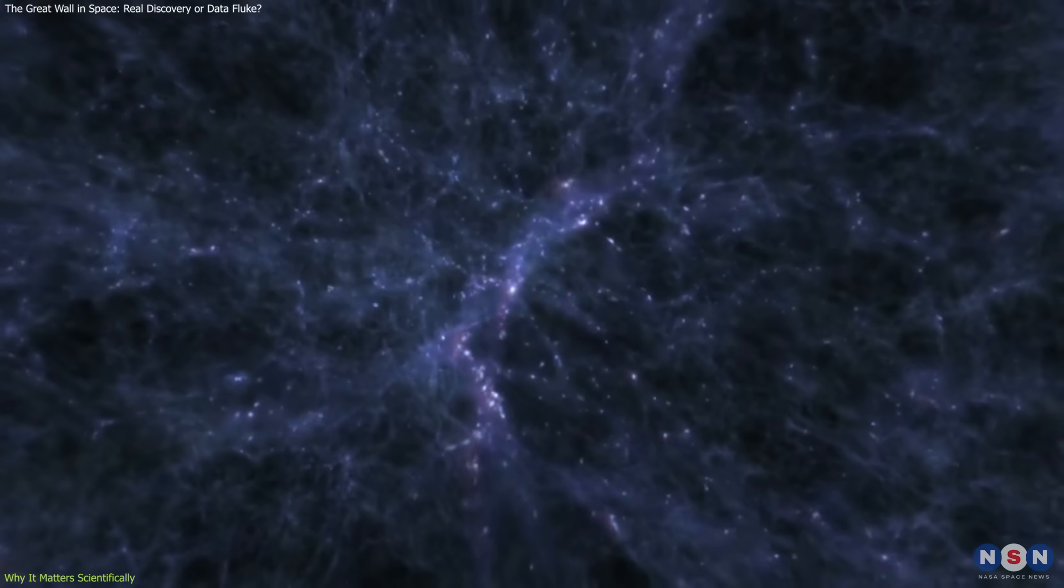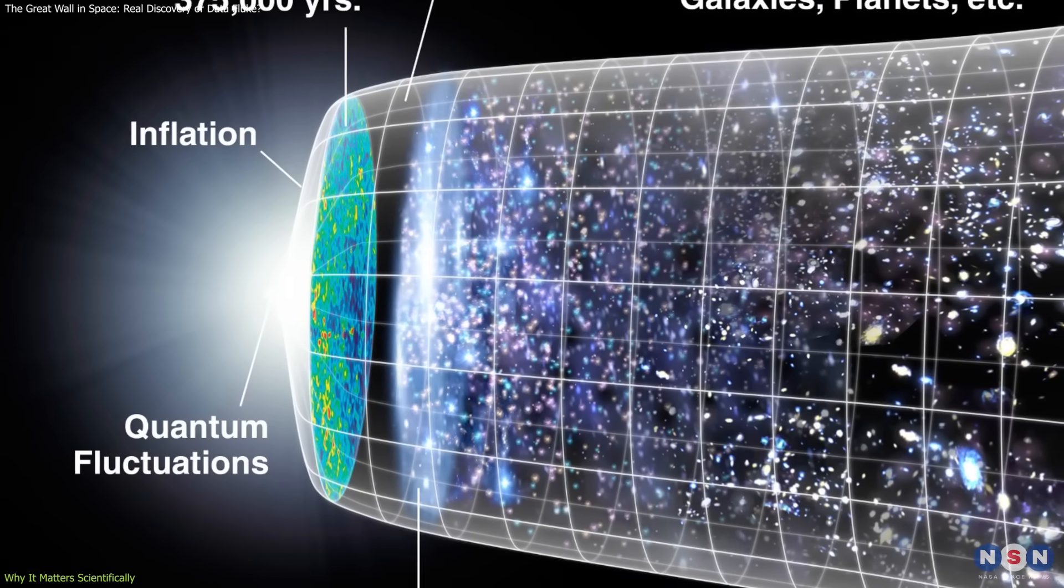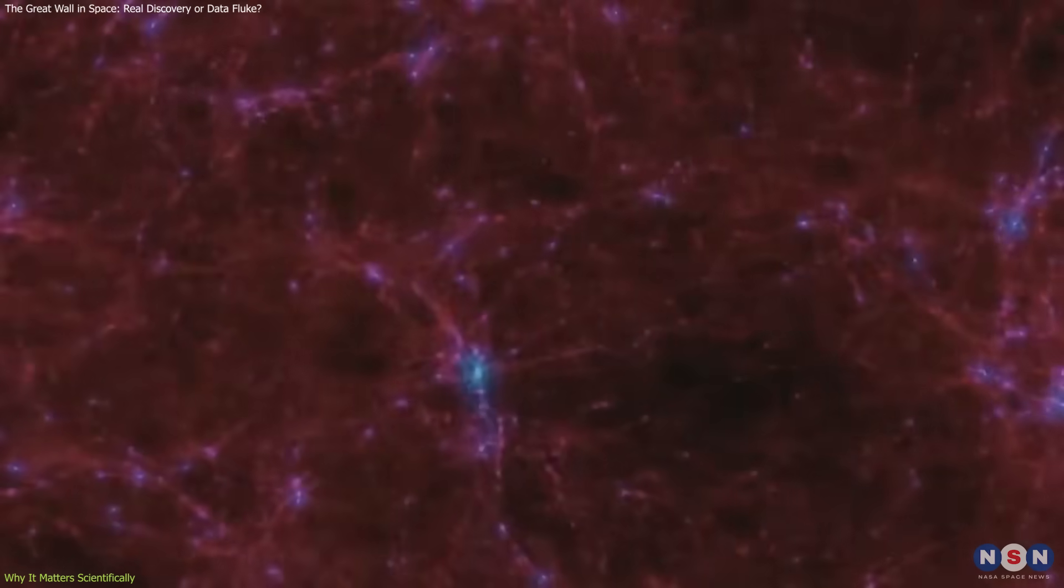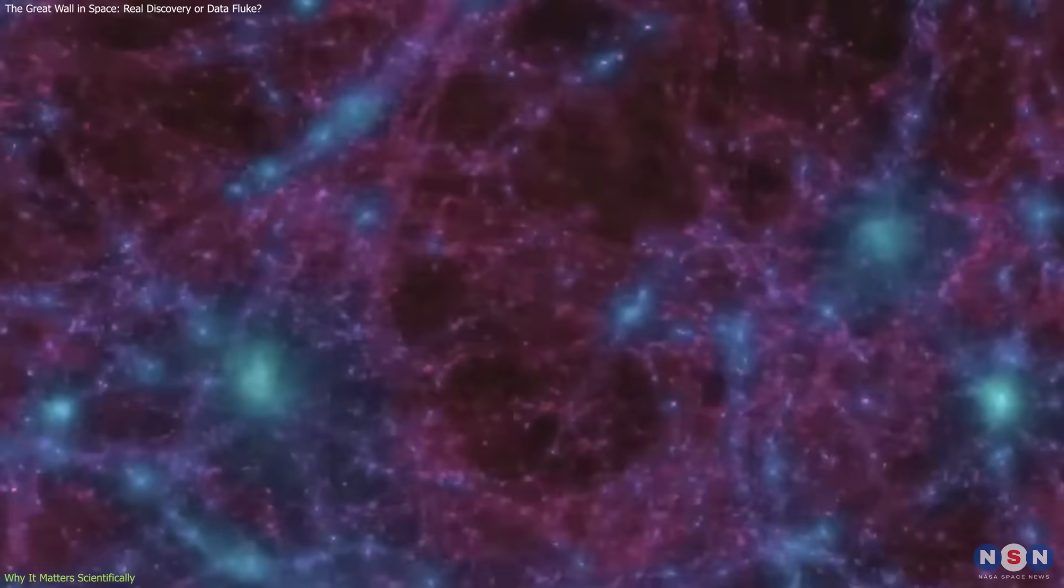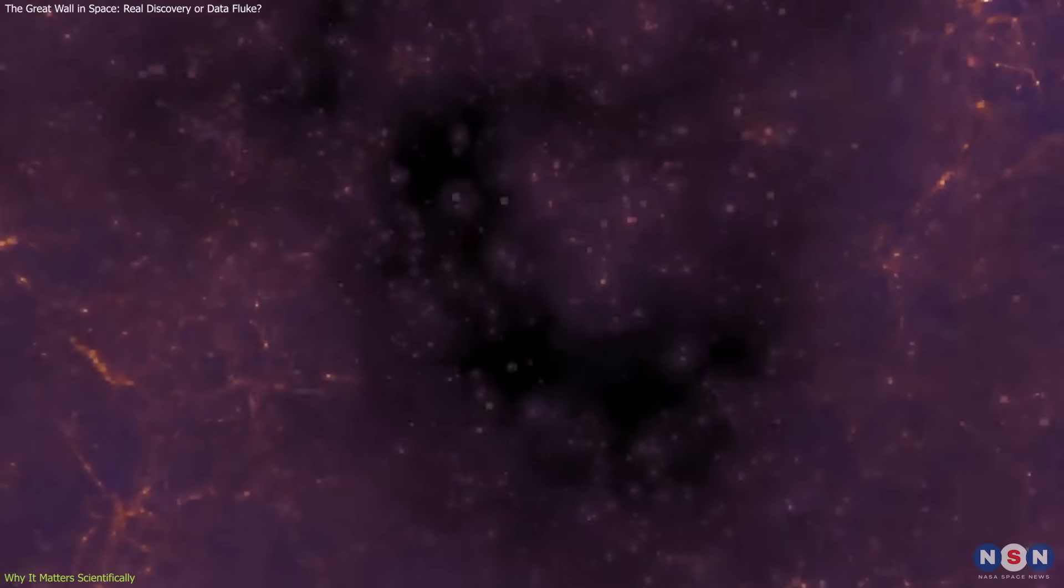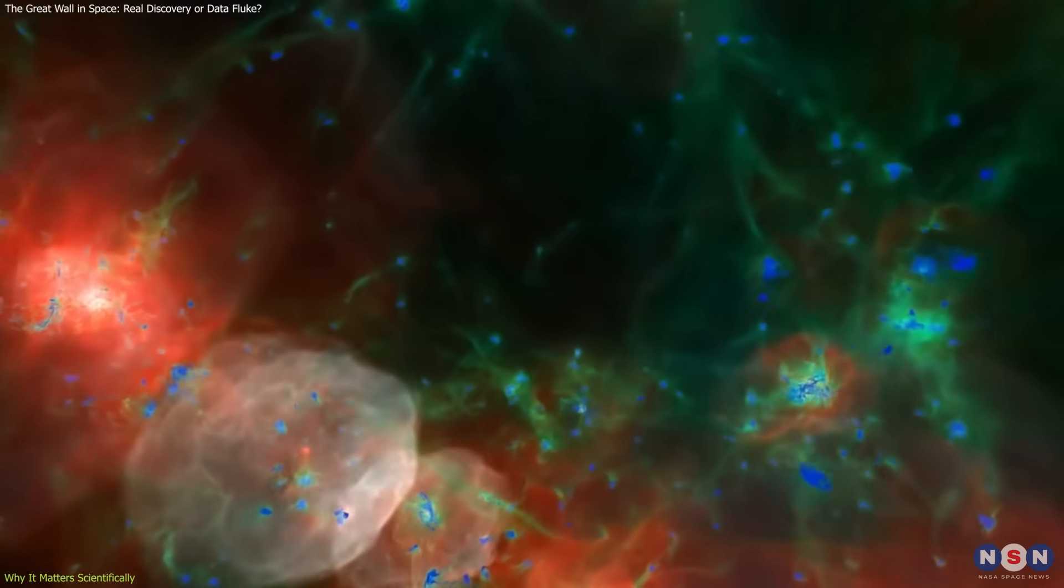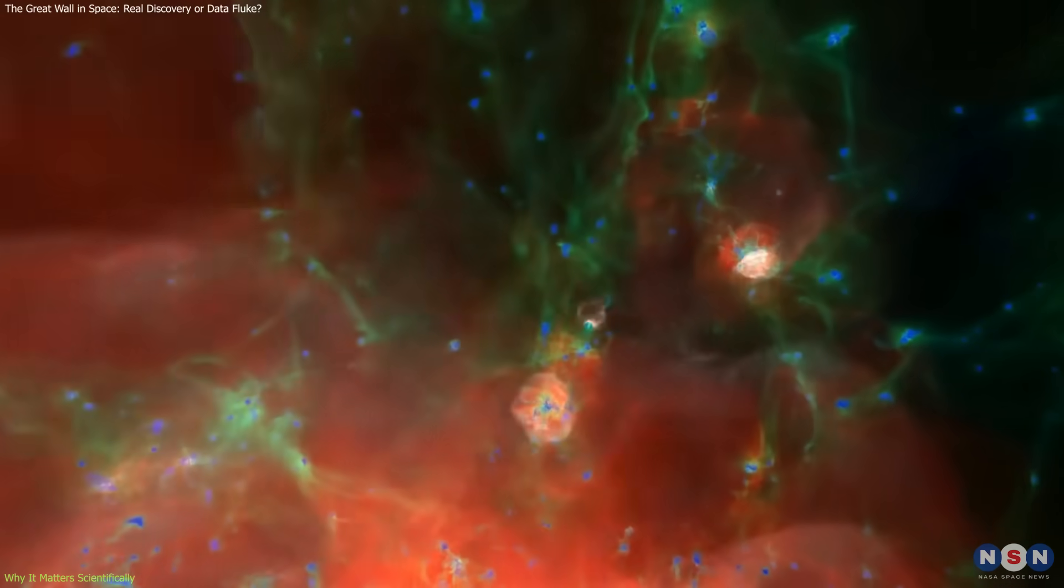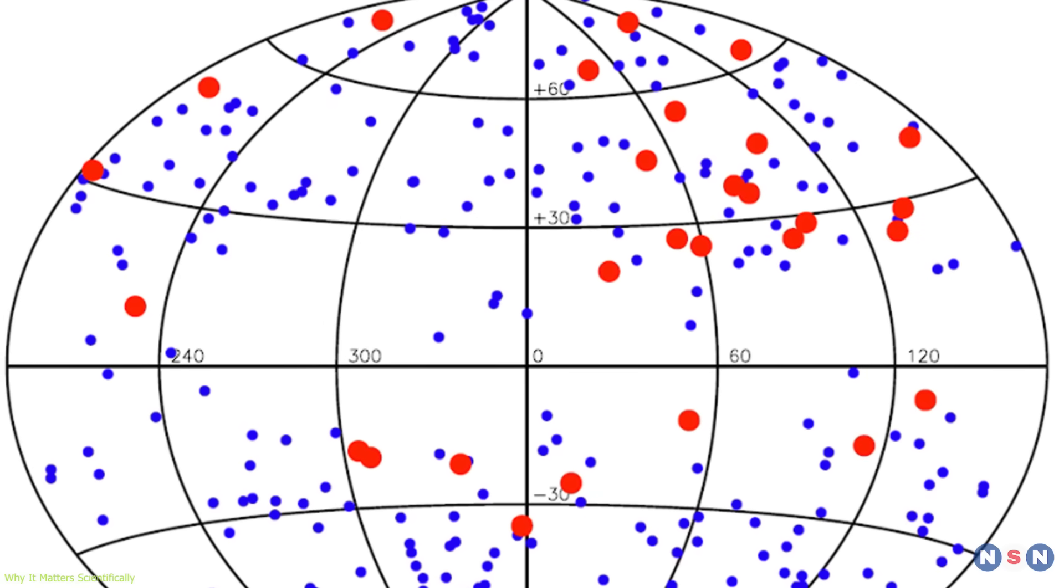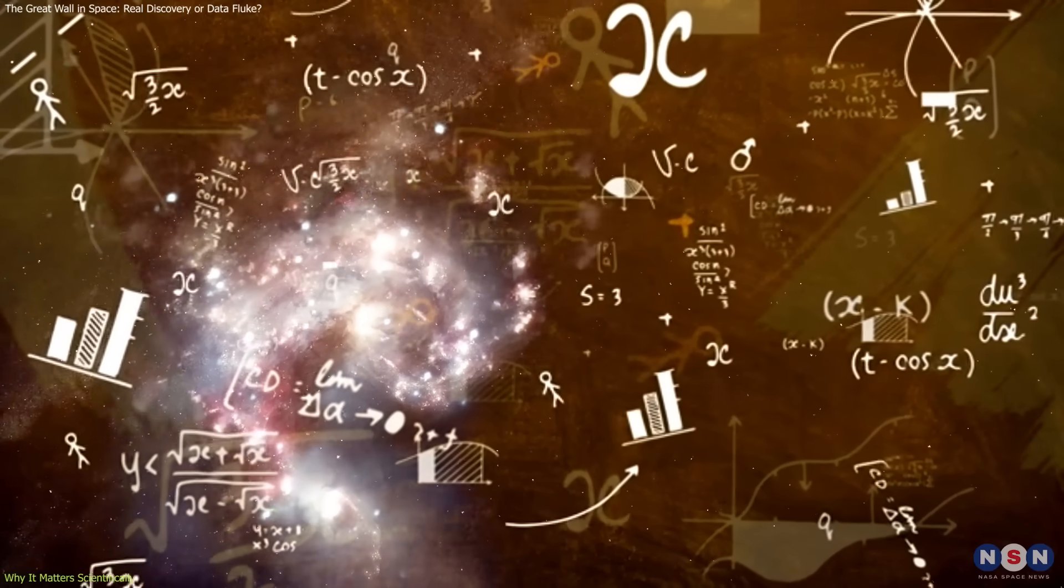Current cosmological models assume that early density fluctuations, enhanced by a rapid expansion called inflation, eventually formed galaxies and clusters. These fluctuations were thought to be relatively small and random. A structure this size could suggest stronger-than-expected initial fluctuations, or even regional differences in inflationary behavior, ideas that aren't ruled out but aren't part of the mainstream model either. Some physicists have proposed that the Great Wall might represent a statistical outlier, an extremely rare, but still possible, arrangement of matter under known physical laws.